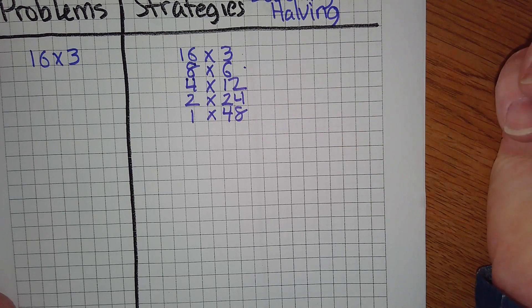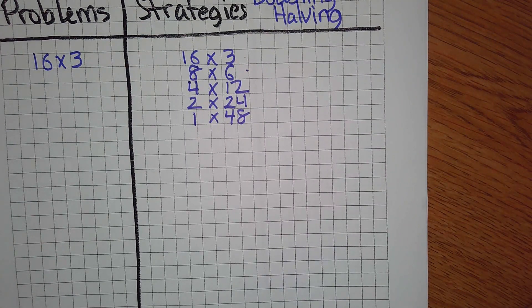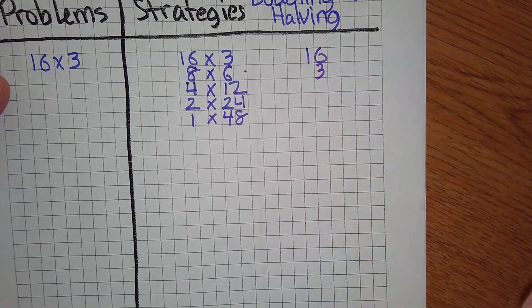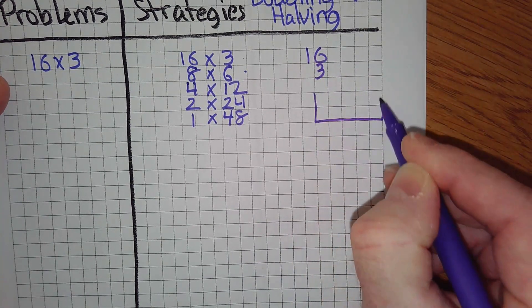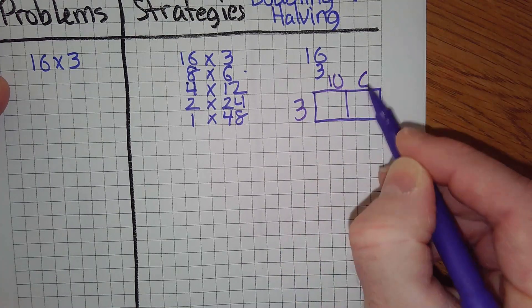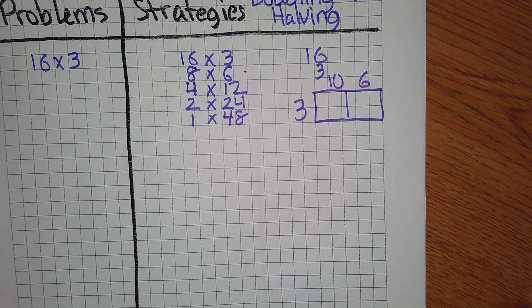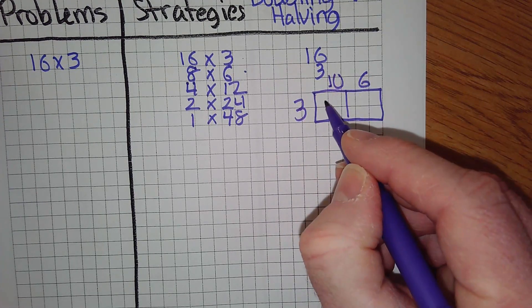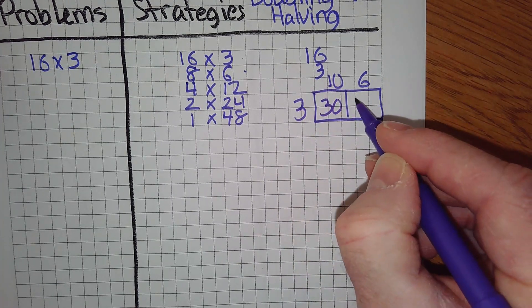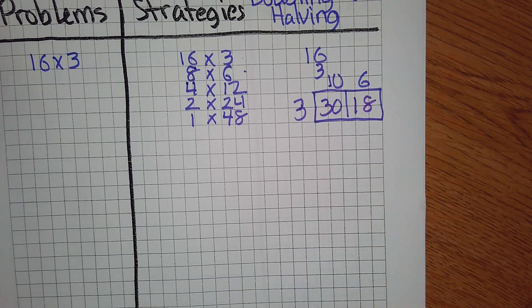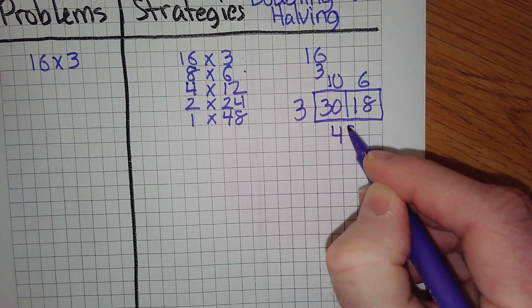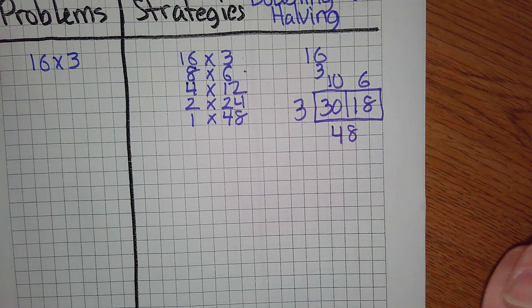16 times 3, some of you can just see that and know what the answer is. Some of you have to do mom-and-pop, some of you need to do partial products, some of you need to do the box method. It doesn't matter how you do it. We have 3 times 10 and 6, because that's what they're made of. What's 3 times 10, Zach? 3 times 6? And then what do we do with the box method? We add them together to get 48.